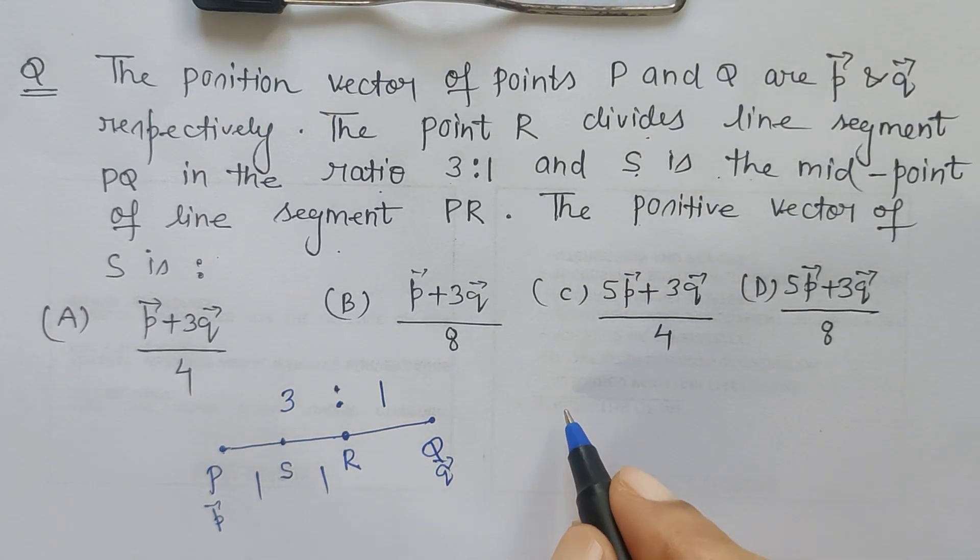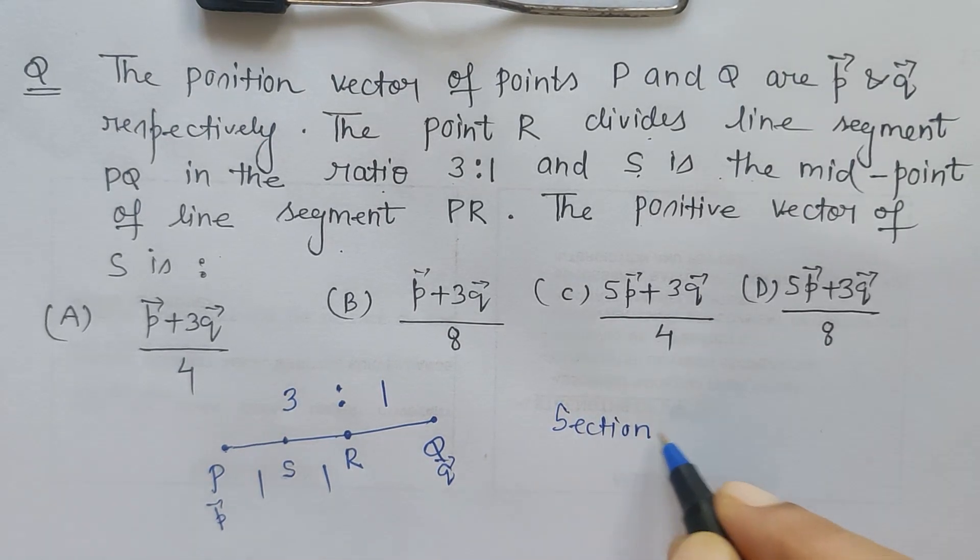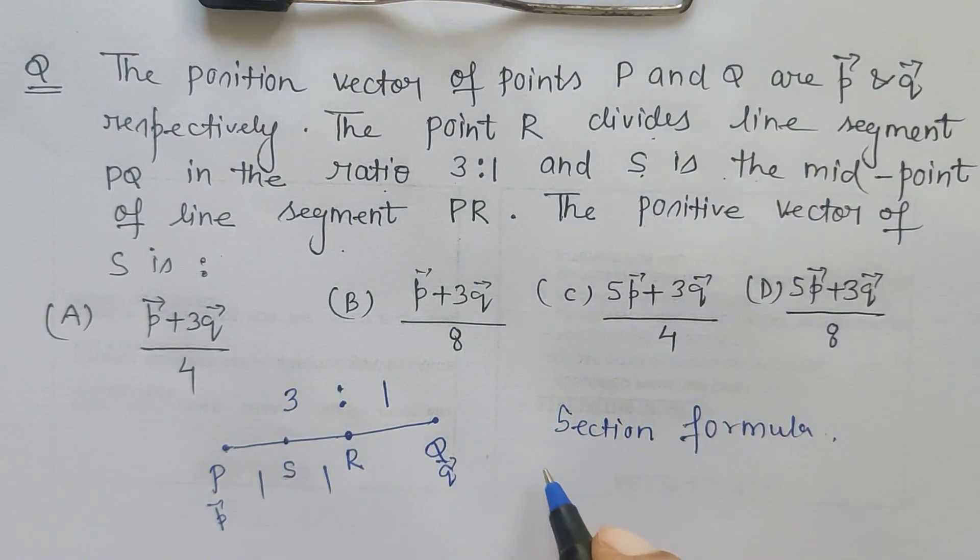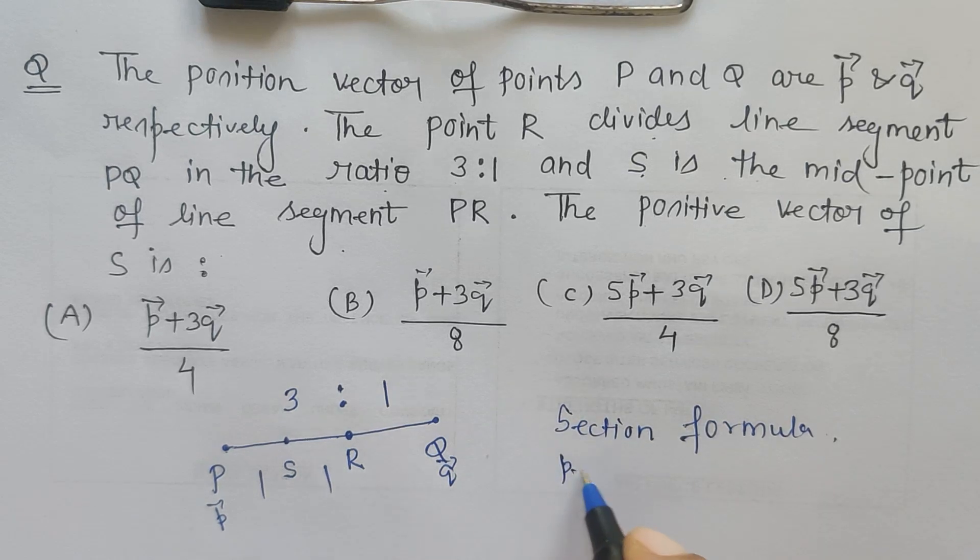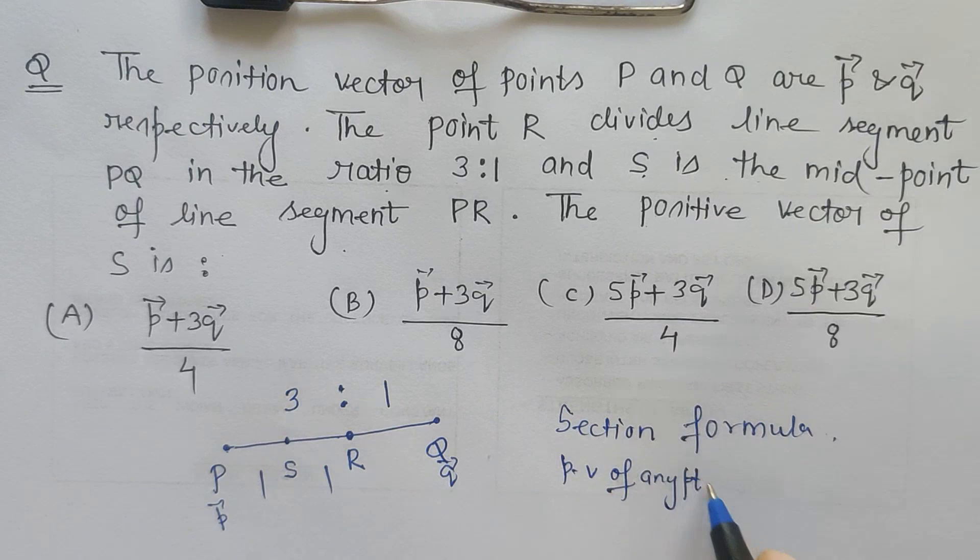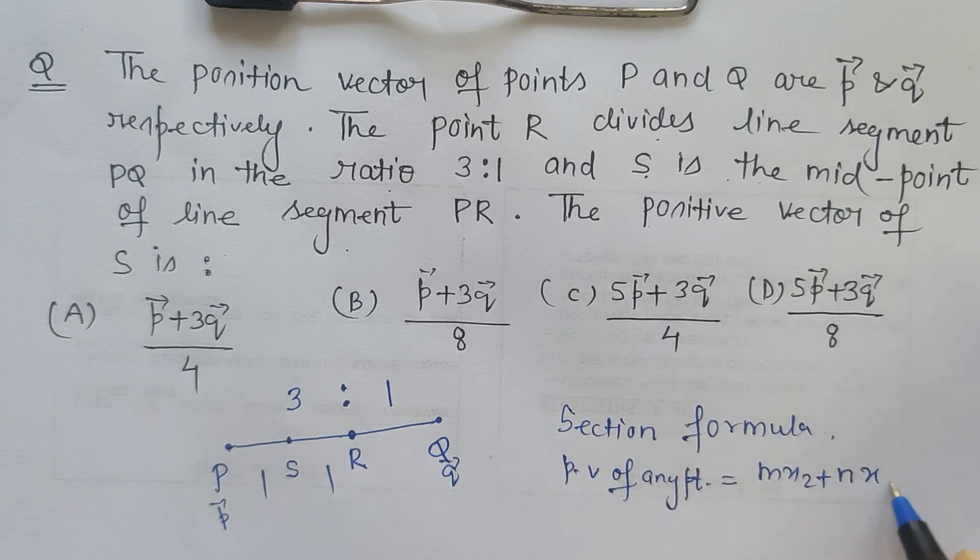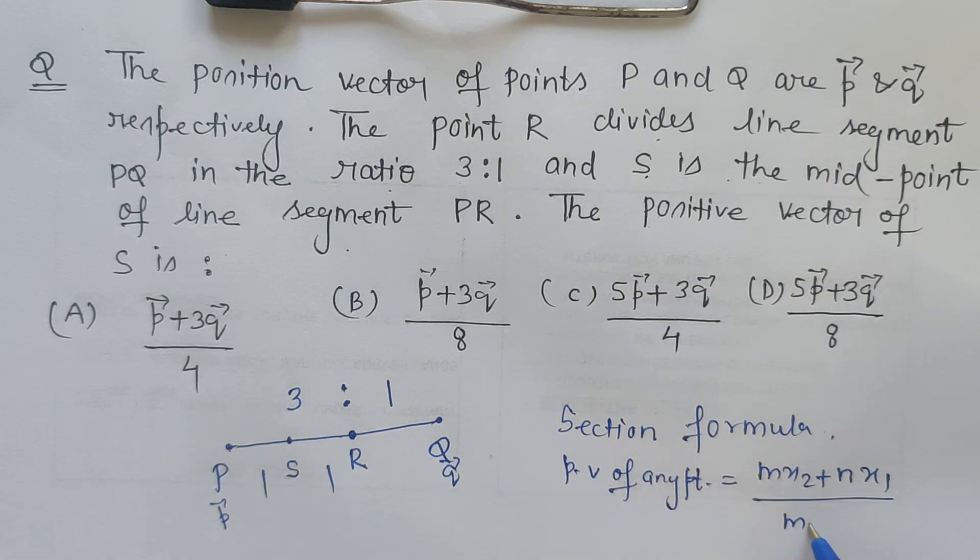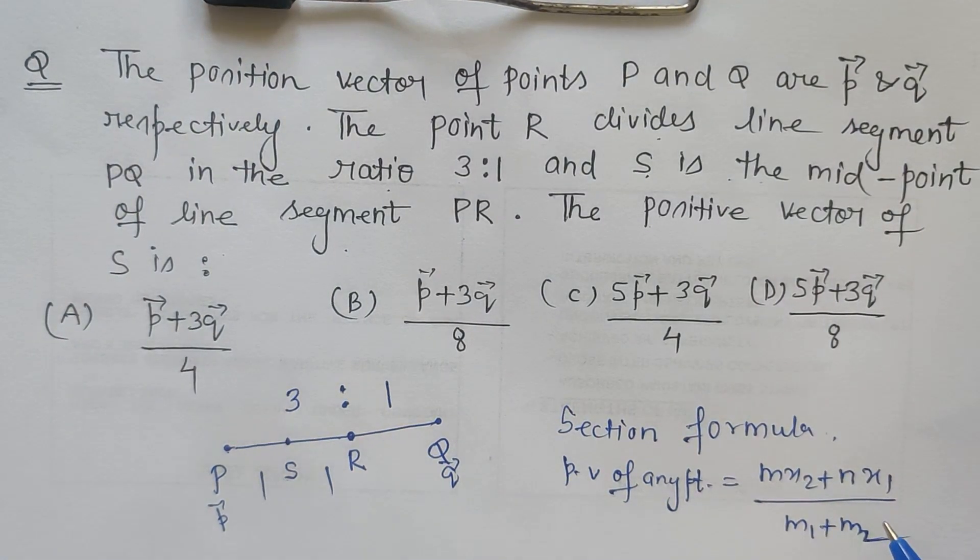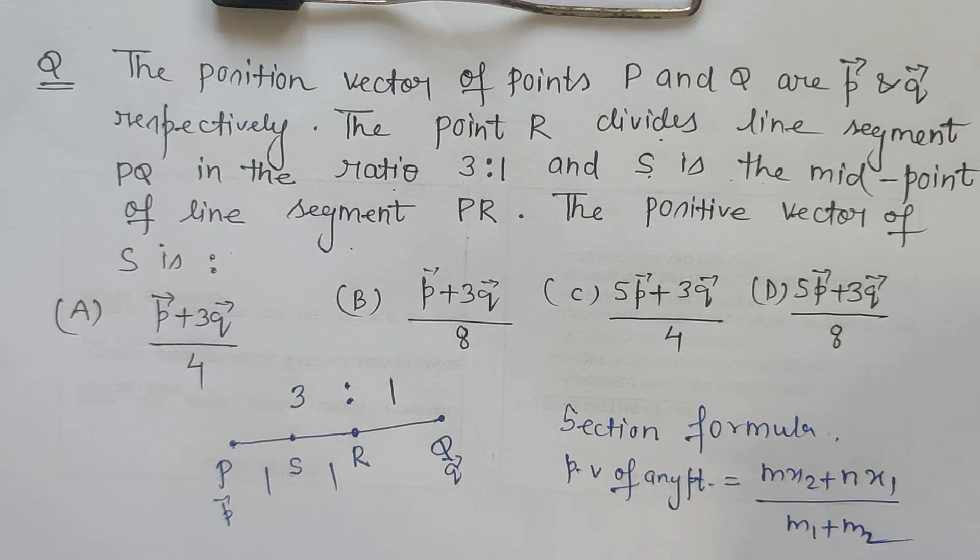So using the section formula, we all know the section formula, that is the position vector of any point is given by M X 2 plus N X 1 upon M 1 plus M 2. So in this way we can find the position vector of any point.